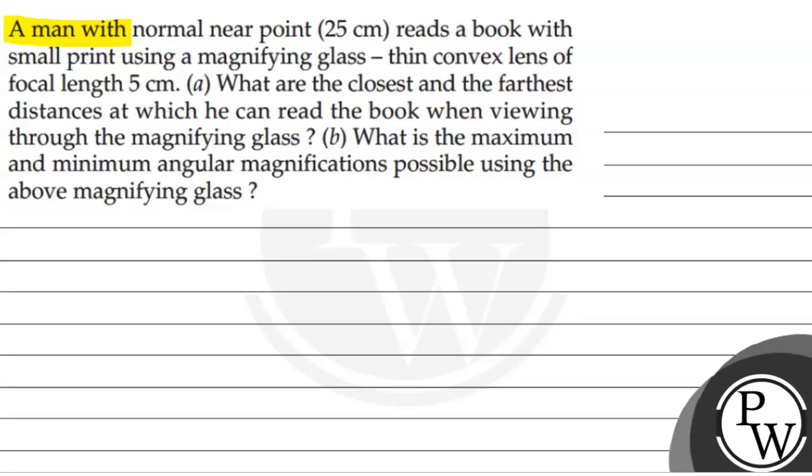The question says a man with normal near point 25 centimeter reads a book with small print using a magnifying glass, a thin convex lens of focal length 5 centimeter.